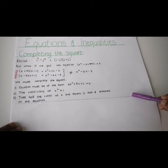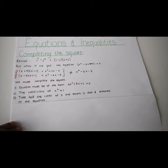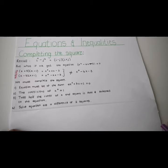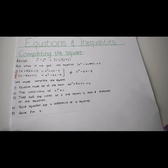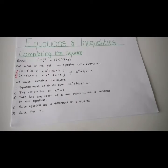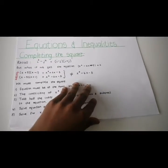For instance, if you say plus 1 minus 1, that's adding 0. You then solve the equation as a difference of two squares and solve for x. That's how you complete the square — let's do it in an example.